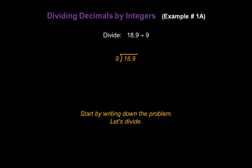9 into 18, how many times? 2 times. 9 times 2 is 18, so we end up with a remainder of 0. Let's pull down that last 9.